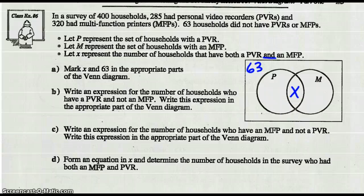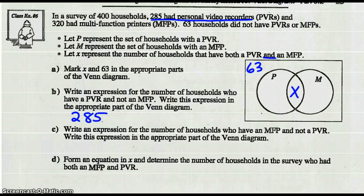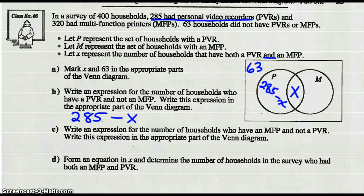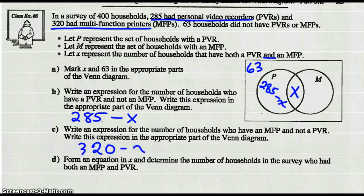Part B: write an expression for the number of households who have a personal video recorder and not a multifunction printer. We know 285 people had a personal video recorder. But how many do not have a multifunction printer? X is the intersection of those, so we have to subtract the X. So that expression, 285 minus X, goes in the PVR-only region of the Venn diagram. Part C: write an expression for the number of households who have a multifunction printer but not a personal video recorder. 320 is the total in the multifunction printer circle, so 320 minus X goes in that part of the Venn diagram.